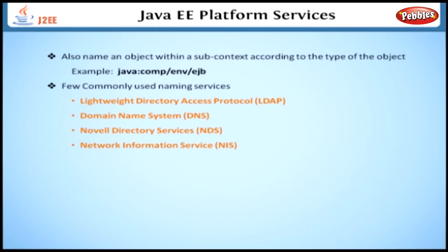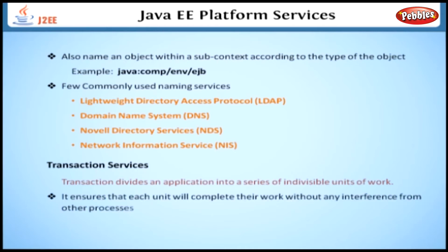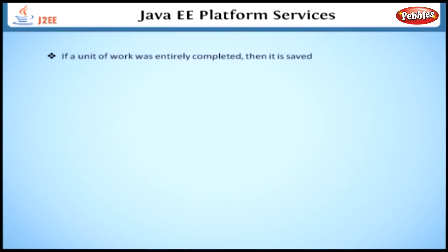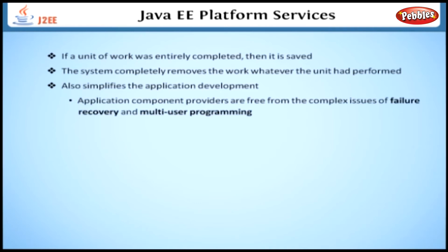Let us now see something about transaction services. A transaction divides an application into a series of indivisible units of work. If the system supports transactions, it ensures that each unit will complete its work without any interference from other processes. If the unit of work was entirely completed, then it is saved; otherwise, the system completely removes the work that the unit had performed. Transactions also simplify application development because component providers are free from the complex issues of failure recovery and multi-user programming.